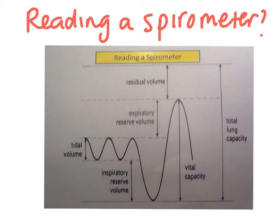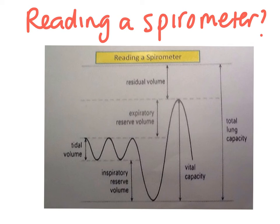Your tidal volume is your normal breathing, and then you've got a little bit left over in this section — that's your inspiratory reserve volume. Likewise, with your normal tidal volume breathing, you've then got your expiratory reserve volume, so you can breathe a little bit extra out. Your vital capacity here is the total amount of air you are able to get into your lungs — breathing in and then breathing out. Then you've got the residual volume, which is the amount of air left in your lungs after your largest exhale.